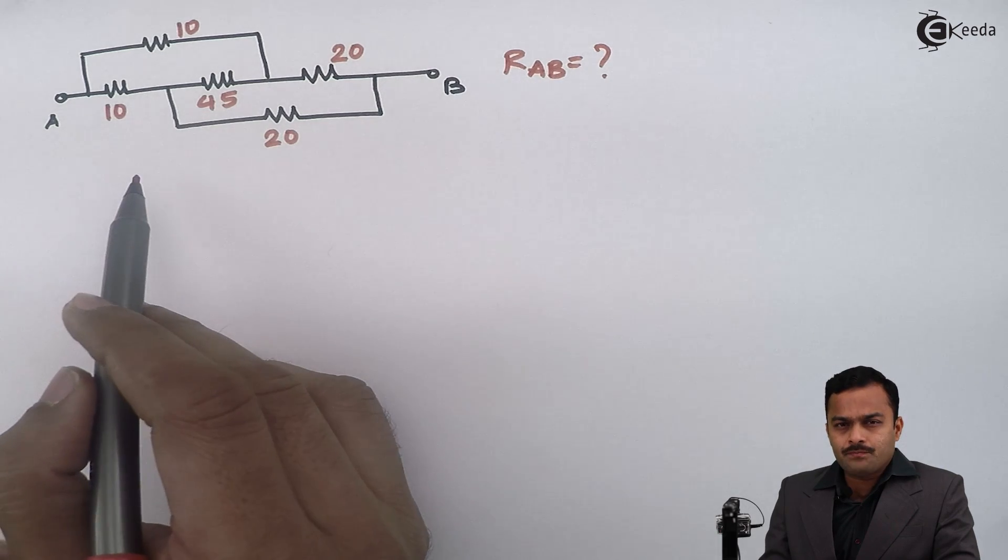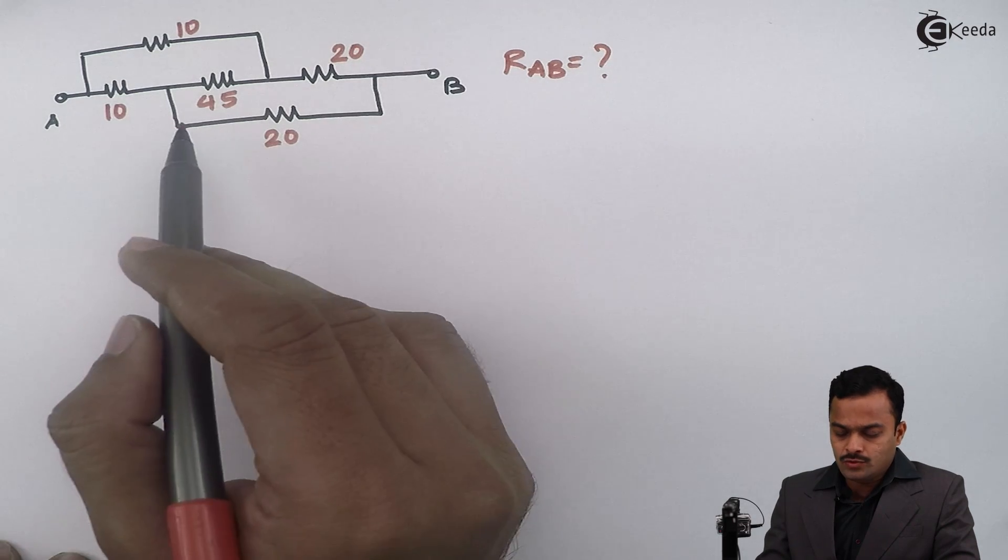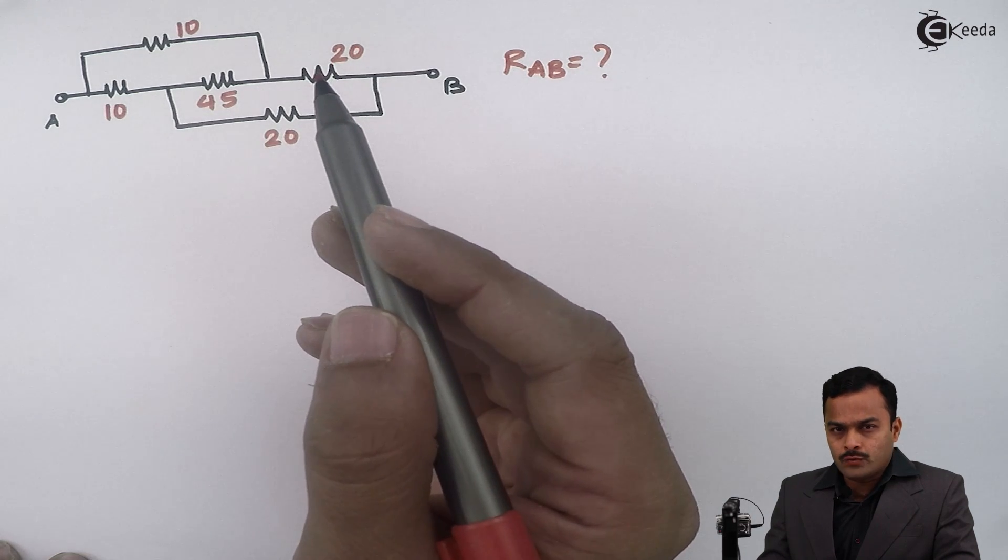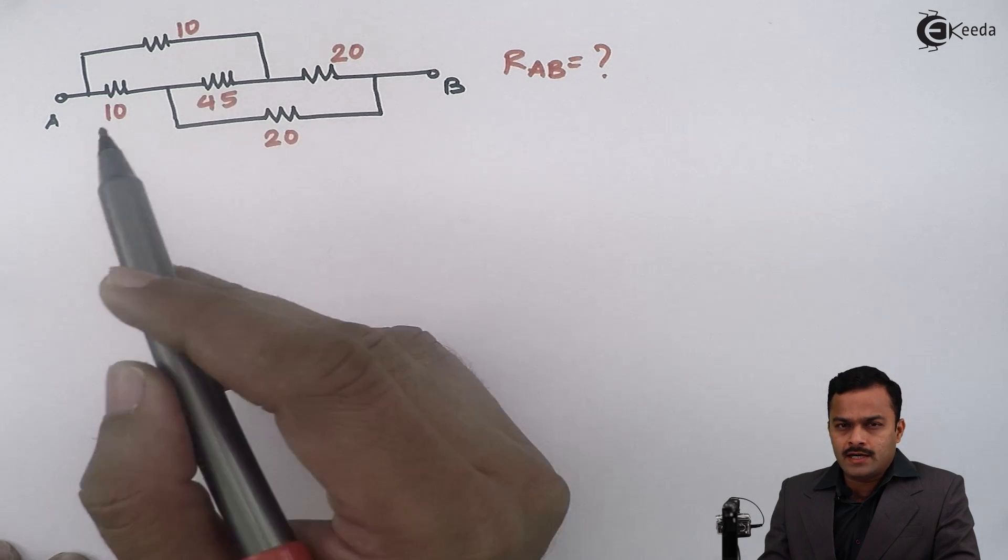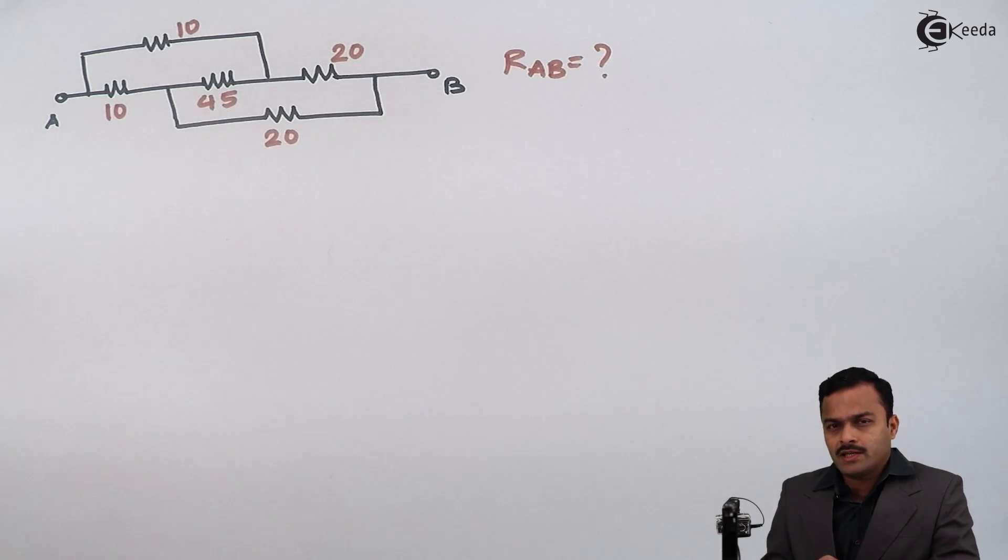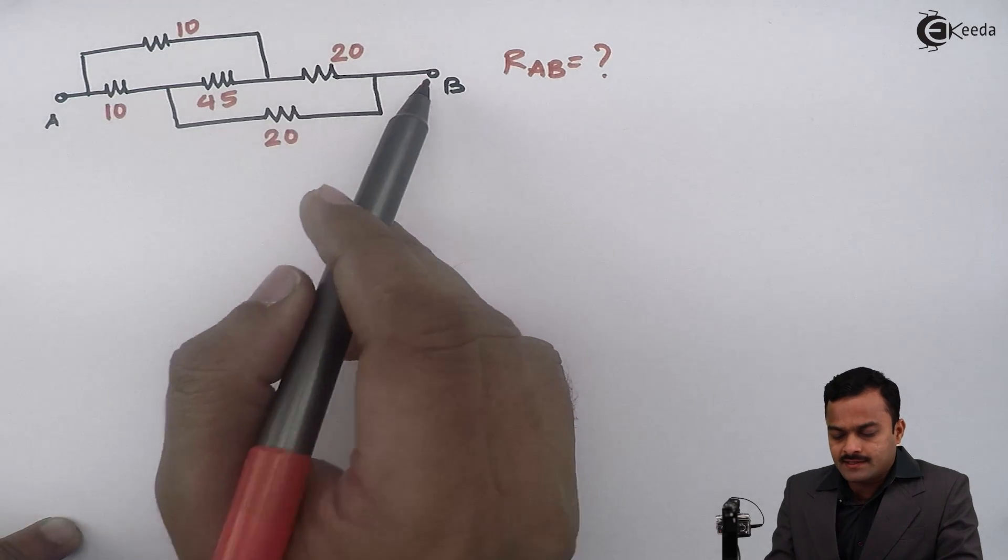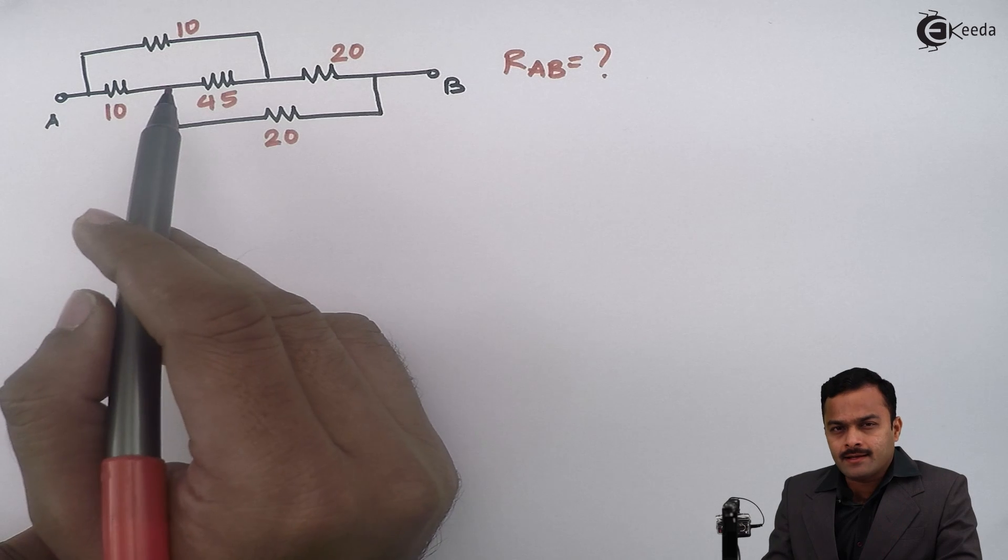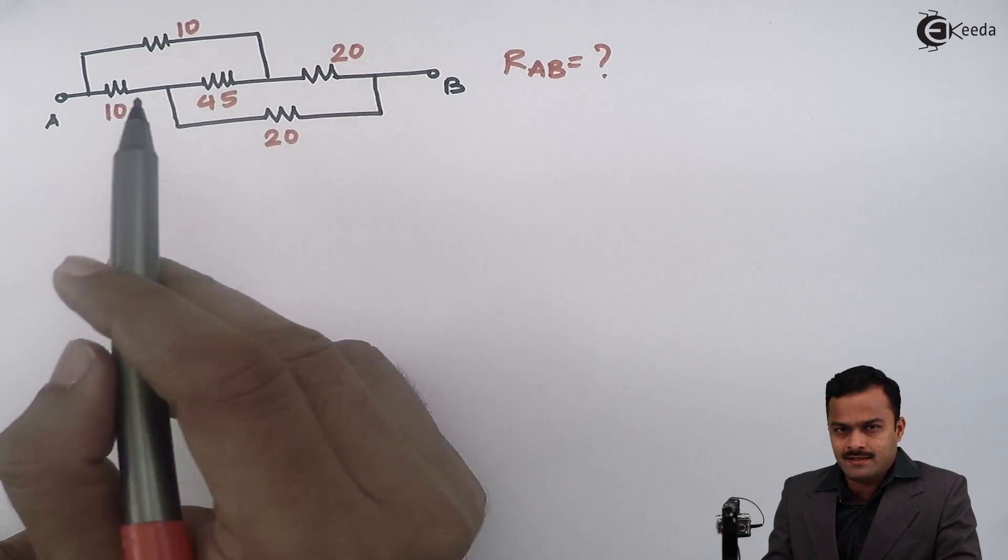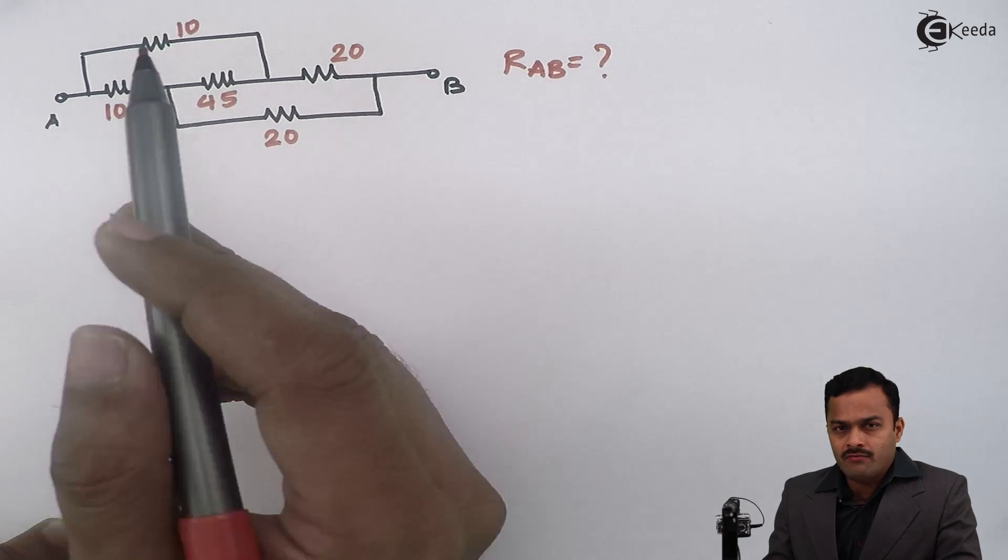So my job is I need to convert one of the star or delta into corresponding counterpart. Whenever we are converting star to delta or delta to star, one thing we have to keep in mind is that we have to make sure that points of interest will not get lost. I should not take any star or delta connection which will make this A and B point vanish.